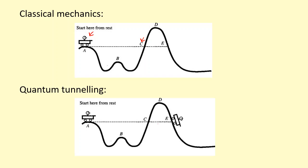Because of the wave nature of the particles, they can go through this gap and reach point E. This is called quantum tunneling.